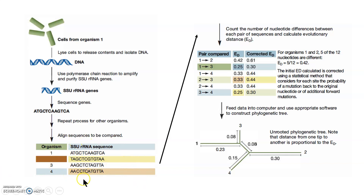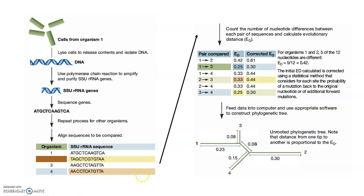You can see sequences for four organisms here. To calculate how different the sequences are from each other, all you need to do is count the differences in nucleotides between each pair of sequences. For example, looking at organisms 3 and 4, we can see there are 3 differences between the sequence of organism 3 and organism 4.